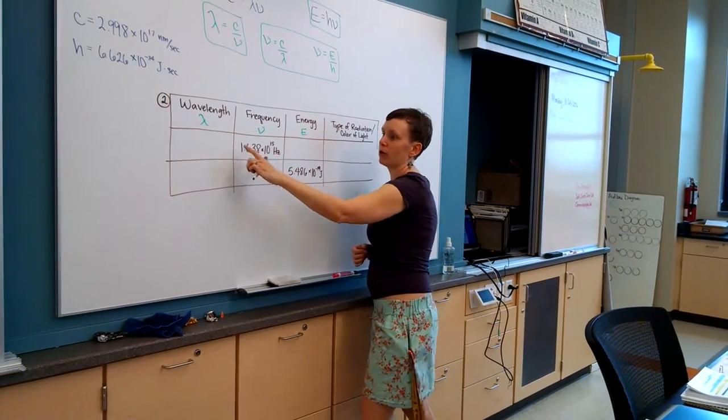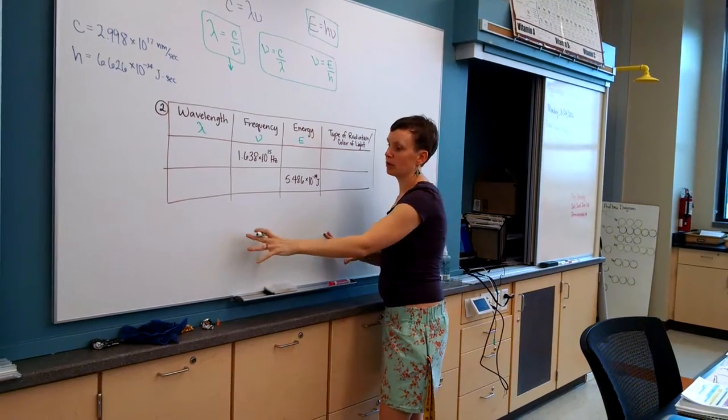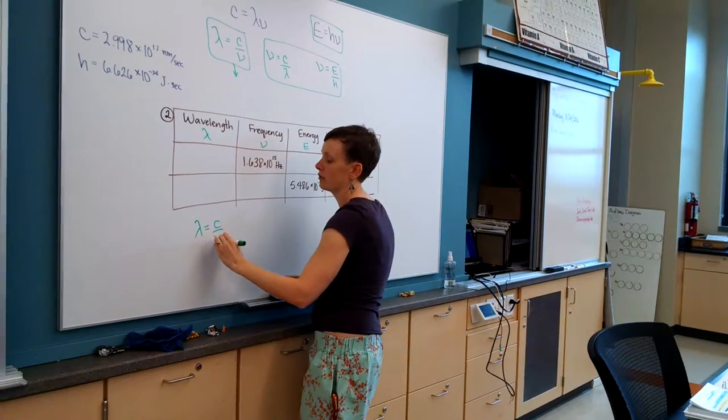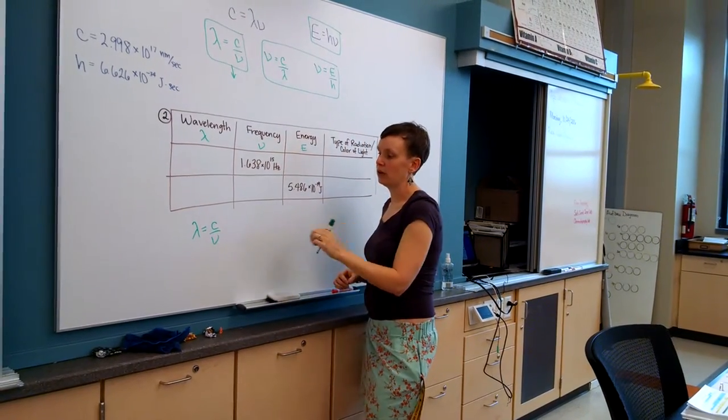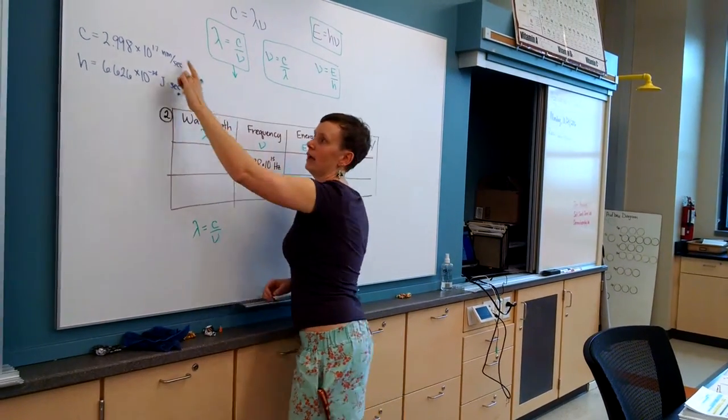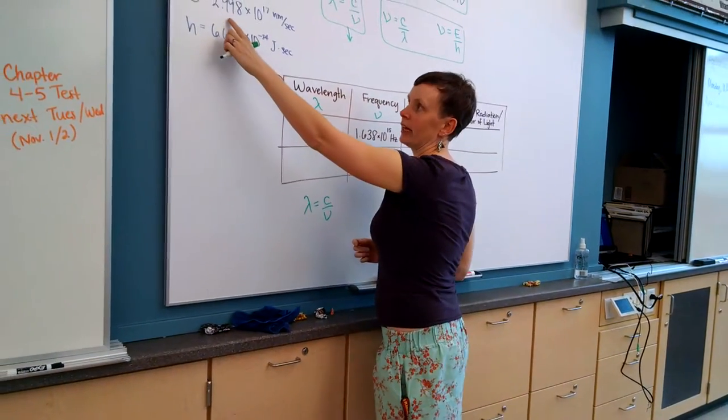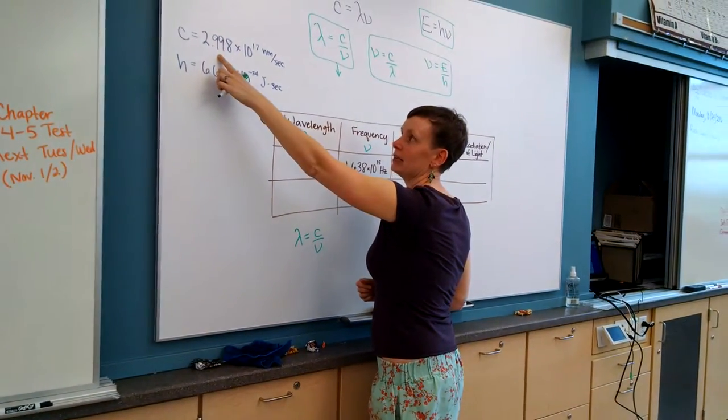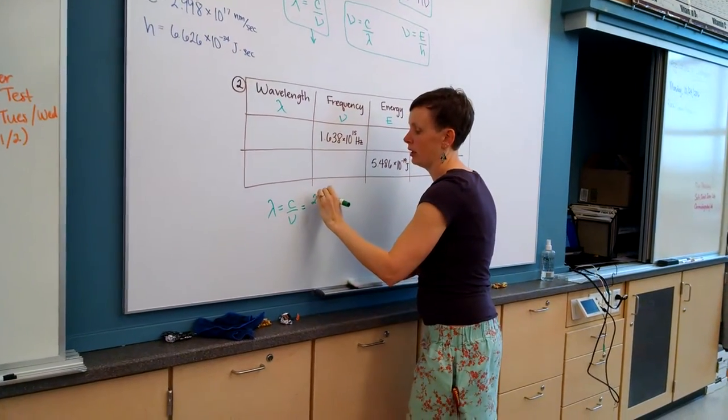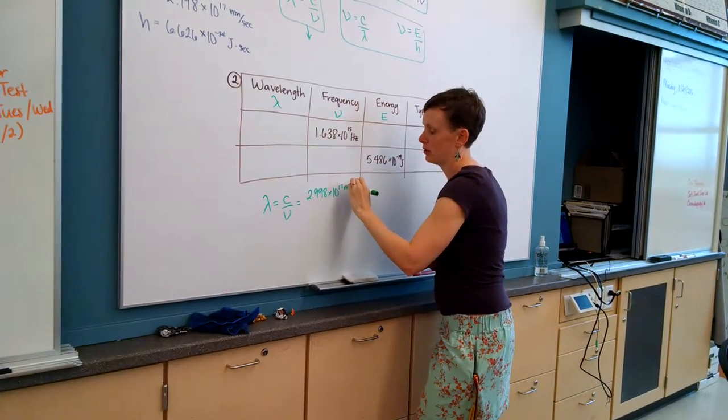When we're given frequency and want to find wavelength, we're going to use this equation. I'll show my work down here. Wavelength equals the speed of light over frequency. You don't have to memorize this equation, it comes from this one. I'll always give this to you on a test, and the constants I will give you on a test. For this lab, the speed of light is 2.998 times 10 to the 17th nanometers per second.